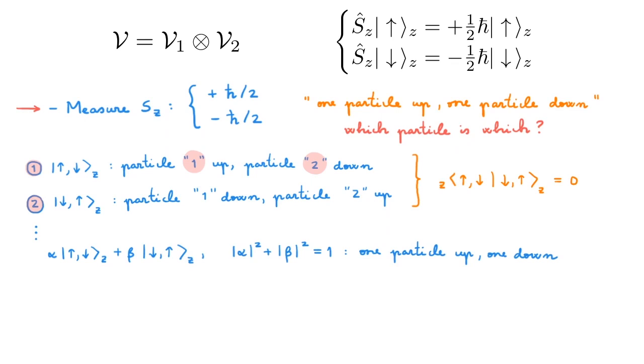To be more precise, this is a superposition state, and alpha is associated with the probability of getting one up to down, while beta is associated with the probability of getting one down to up. What this all means is that there are an infinite number of possible states given by the possible choices of alpha and beta, and all these states appear to mathematically describe the same physical situation.